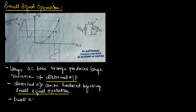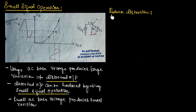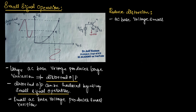Hence, the distorted output can be reduced by using small signal operation. Small AC base voltage produces small variation in the output, and hence it will avoid distortion. The distortion can be reduced by keeping AC base voltage very small. If AC base voltage is kept small, then there will be small variation at the output that will avoid distortion. Smaller the swing at input voltage will reduce distortion.